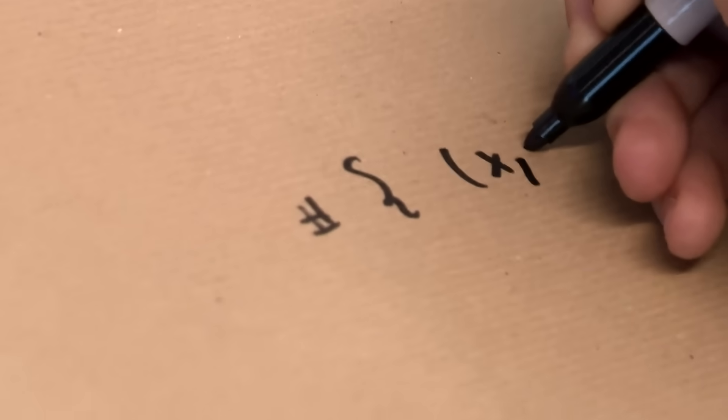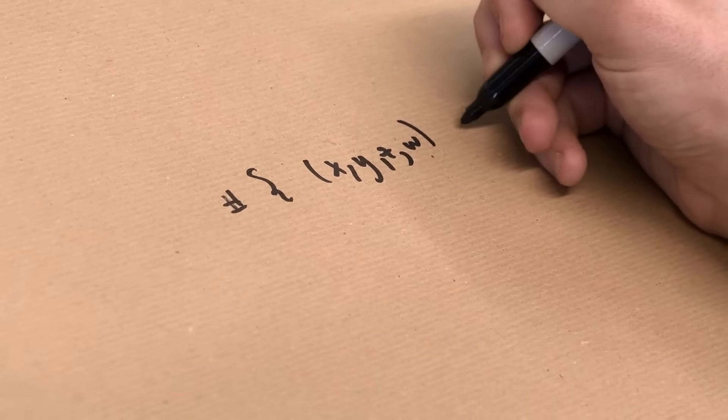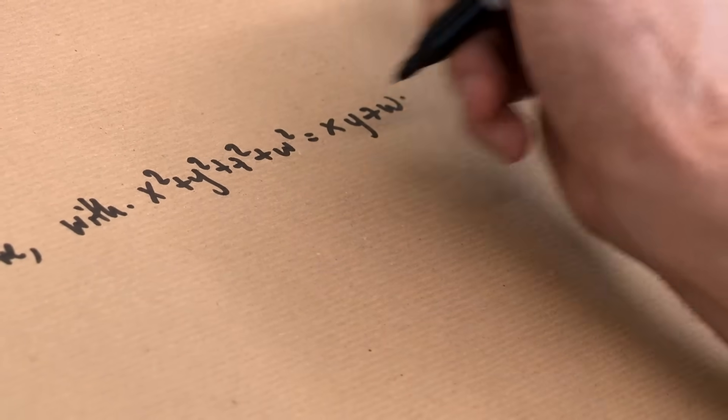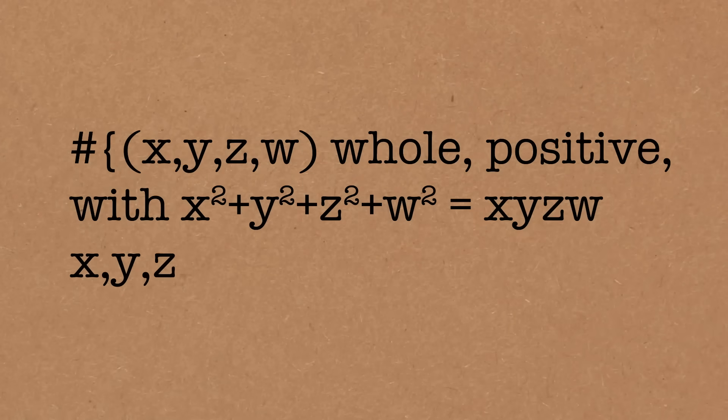I hope I've convinced you there are an infinite number of solutions in whole numbers. Now what I want to do is, in some sense, count them. I'll put an upper bound r on x, y, z and w, and ask: how many solutions are there with each of x, y, z and w less than or equal to r? Let's call this quantity v(r) — the number of four-tuples (x, y, z, w) that are whole, positive, satisfy the equation, and all less than or equal to r. As r gets larger and larger, this quantity gets larger and larger. But how fast?